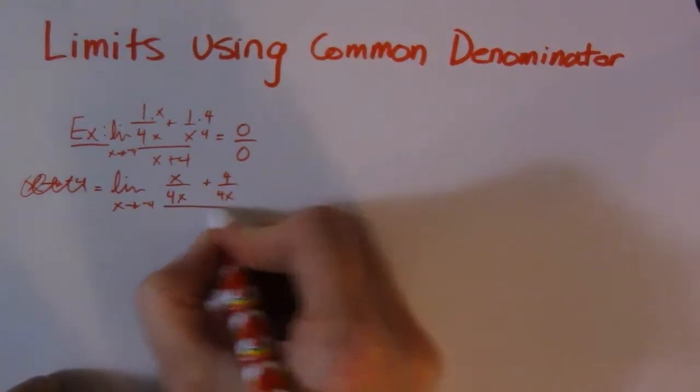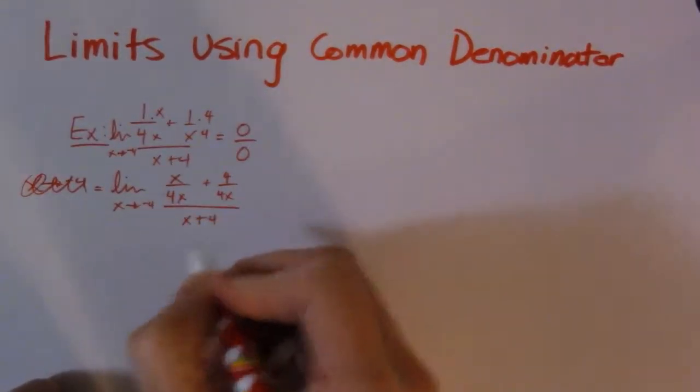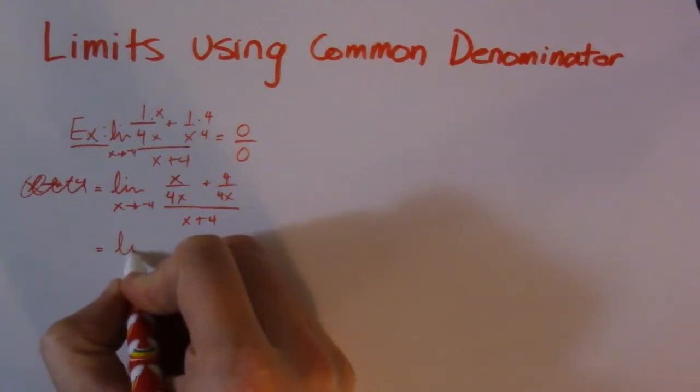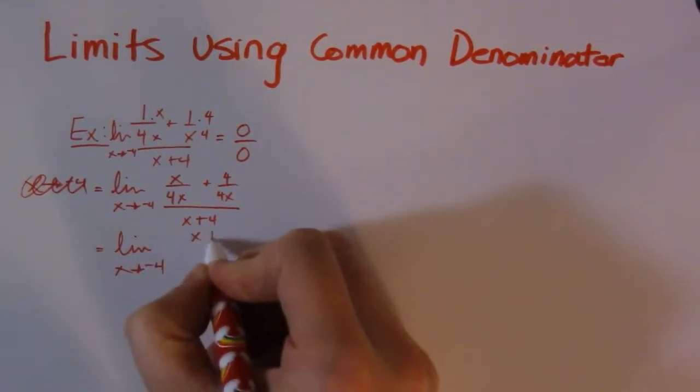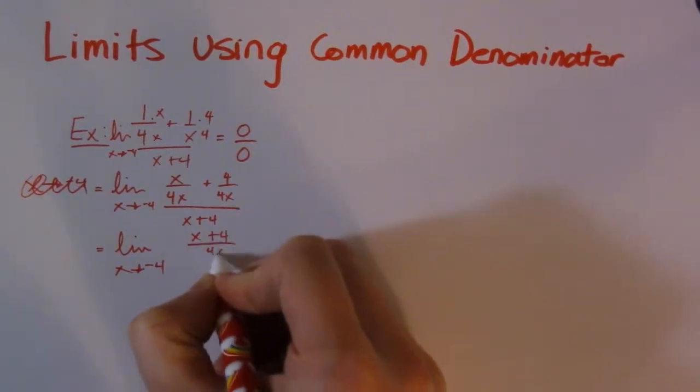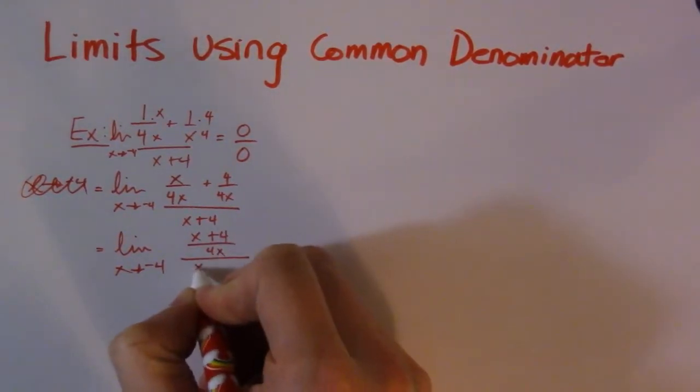So I've got my common denominator, just like that. Then I'll rewrite that over the common denominator. So I have (x + 4) over 4x, all divided by x + 4.